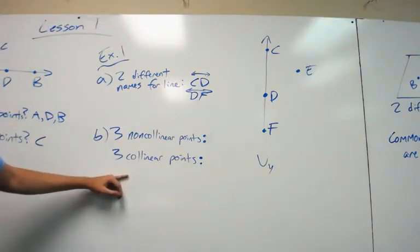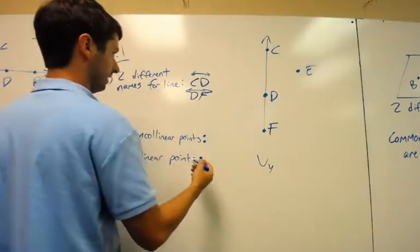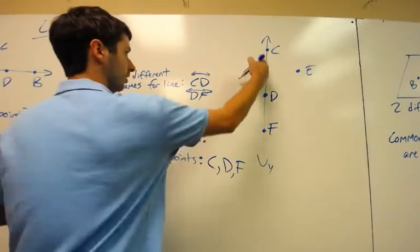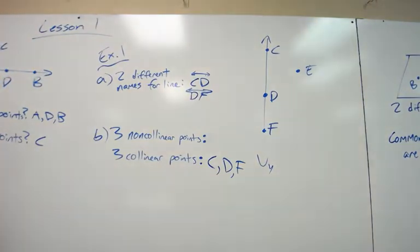Which three points lie on the line? As easy as it gets. This is just bonus work right here. C, D, and F are the only three collinear points on line Y. That's easy right there. So those are three collinear points.